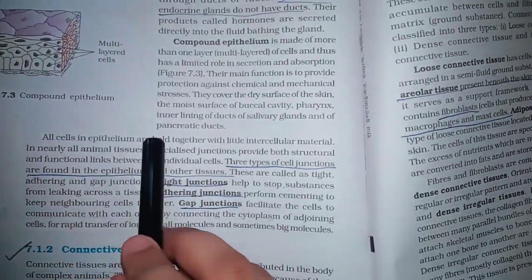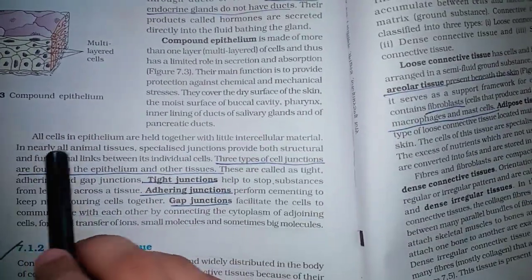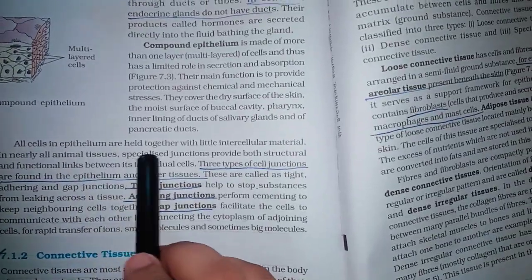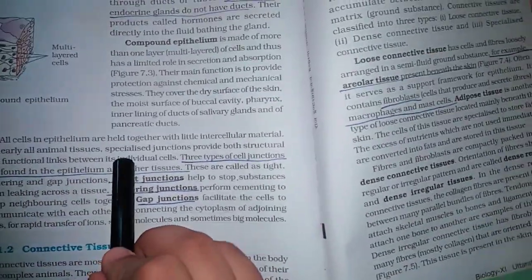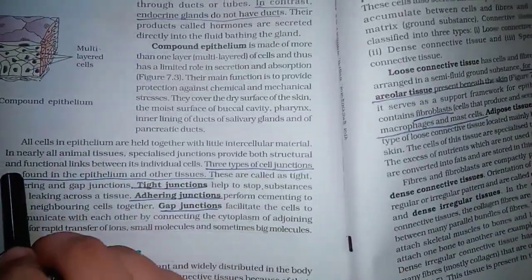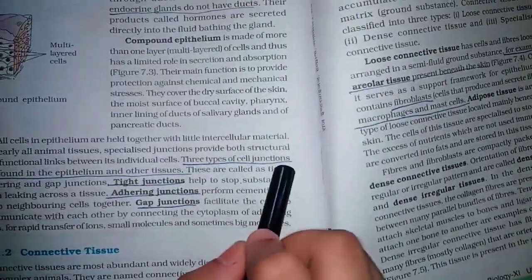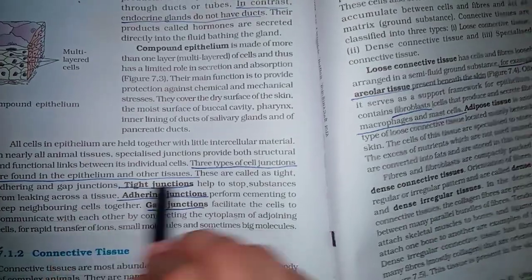All cells in epithelium are held together with little intercellular material in nearly all animal tissues. Specialized junctions provide both structural and functional links between the individual cells. Three types of cell junctions are found in the epithelium and other tissues. These are called tight, adhering and gap junctions.